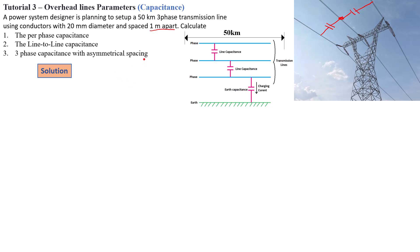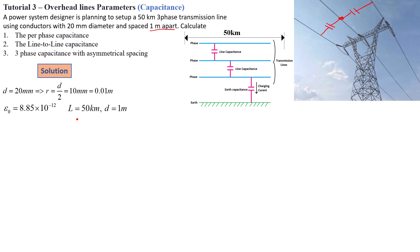The diameter of our conductors is 20 millimeters, which gives us a radius of 0.01 meters. The next parameter is the permittivity of free space — the dielectric of this capacitor is vacuum, or air, which is the free space. The length of the line is 50 kilometers and the spacing between the conductors is 1 meter.